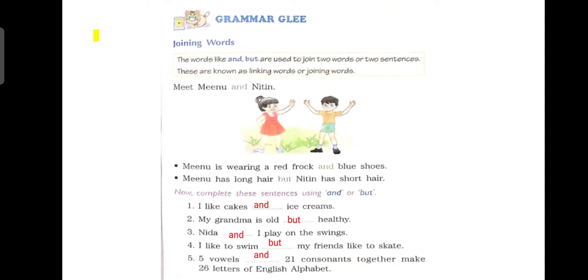My grandma is old, meri grandma old hai, dash healthy. BUT healthy. Woh old hai par healthy hai. Nida dash I play on the swings. Nida and I. Nida aur main. I like to swim dash my friends like to skate. BUT.